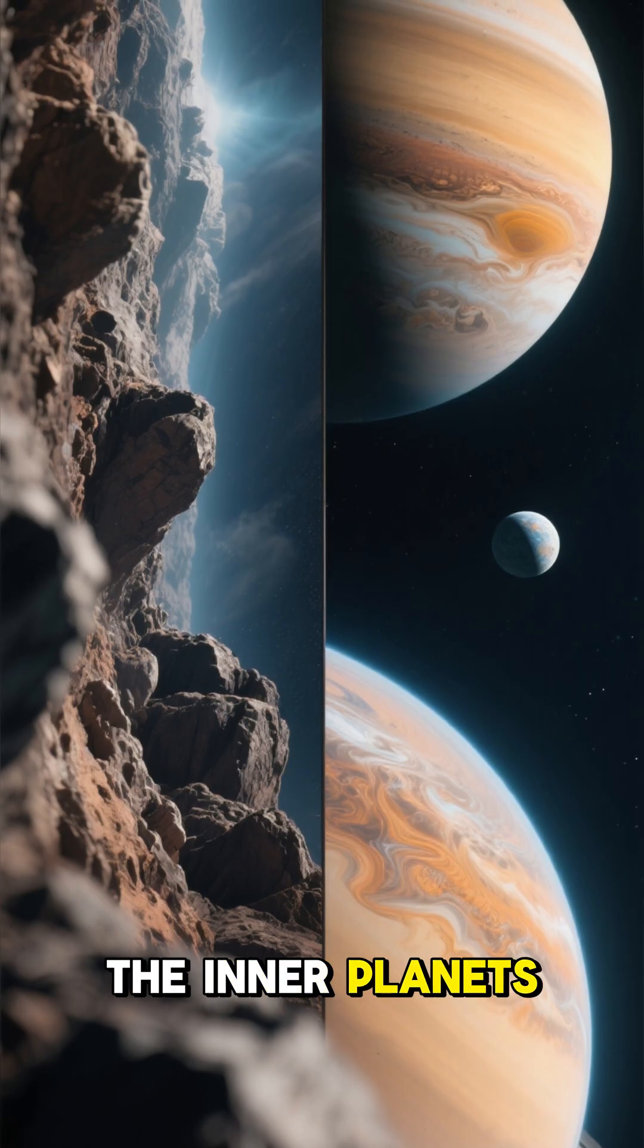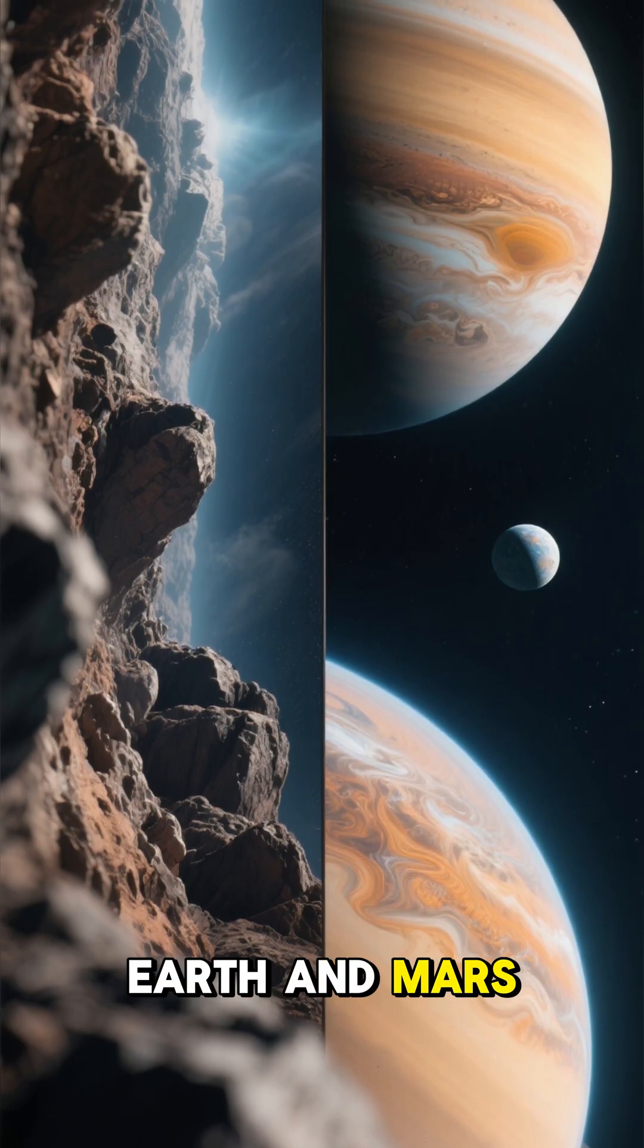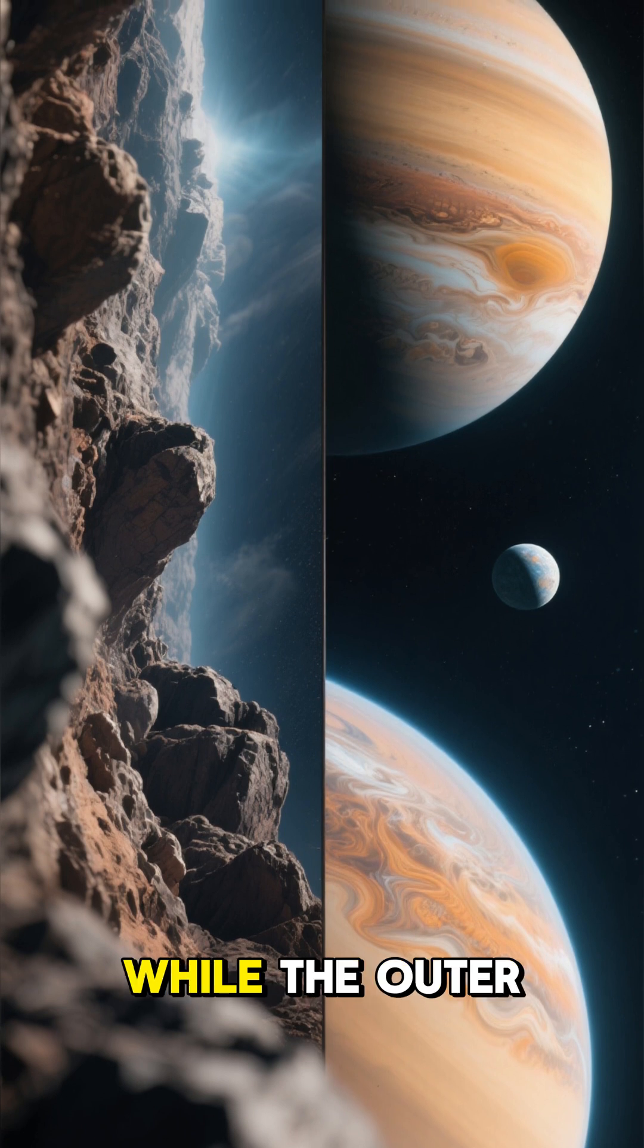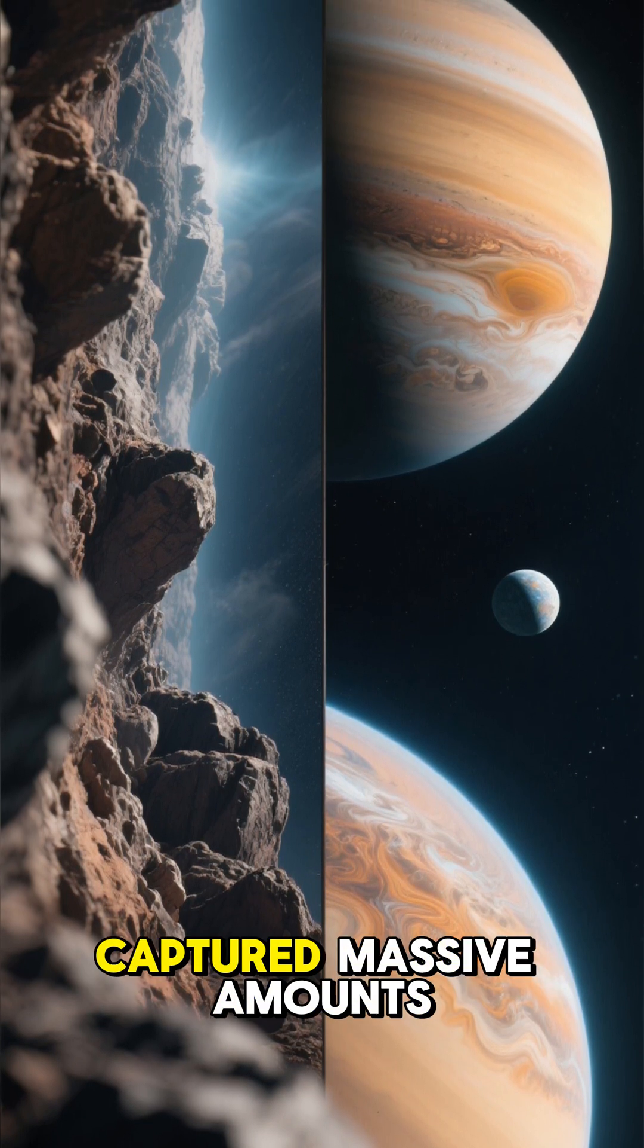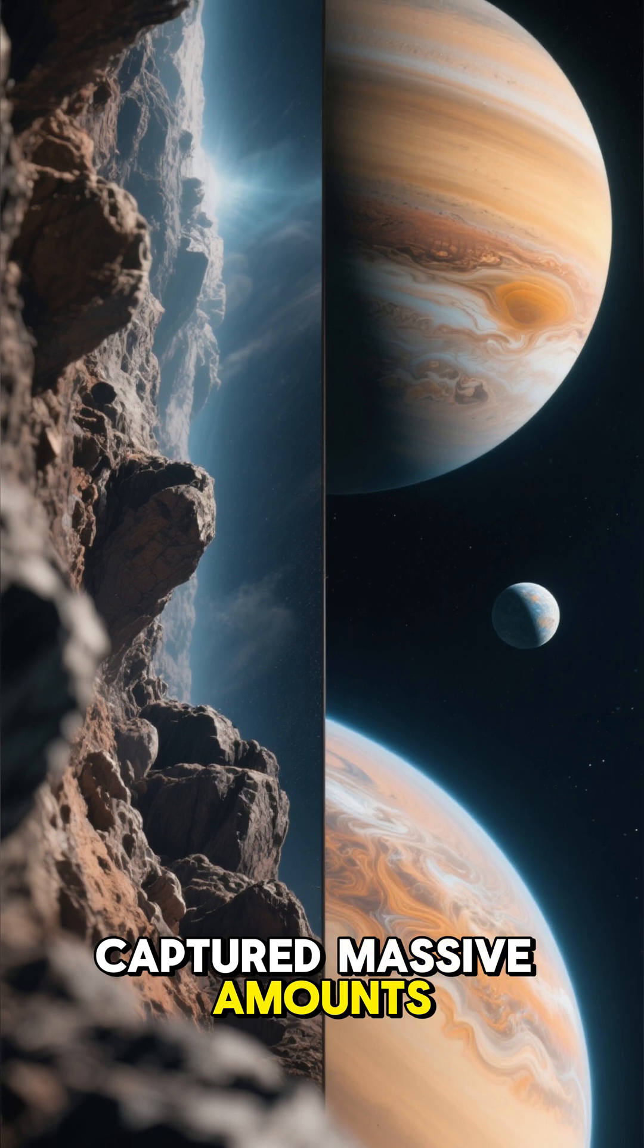The inner planets like Earth and Mars formed from rocky materials, while the outer giants like Jupiter and Saturn captured massive amounts of gas.